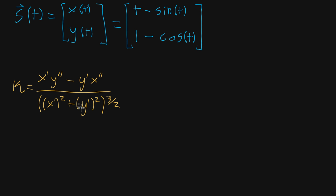So first thing to do is just find x prime, y double prime, y prime, and x double prime. So let's go ahead and write those out. So the first derivative of x of t, if we go up here, that's t minus sine of t. So its derivative is one minus cosine of t, minus cosine of t.